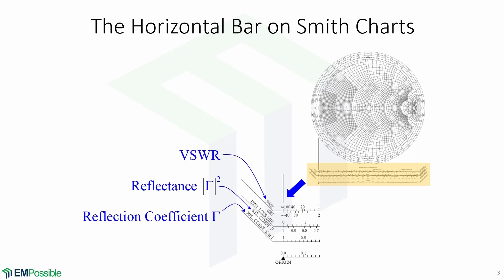Now, I will draw your attention to the horizontal bars that are located at the bottom of the Smith chart and are highlighted here. If we zoom in, we will see three different horizontal lines with different values for different parameters.